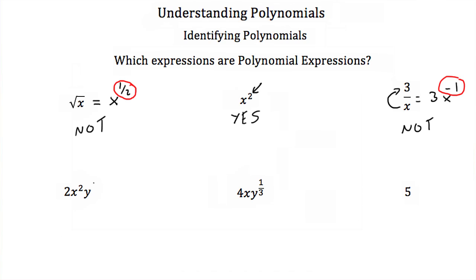Next, we have 2x squared times y. You can think of this as y to the 1. And 2 and 1 are both whole numbers. These are just two variables and a constant term all multiplied together, so this satisfies all the rules for a polynomial — yes, this is a polynomial. Our next example is 4x times y to the one third. This one third ruins it for us, as this is not a whole number exponent. So this is not a polynomial expression.